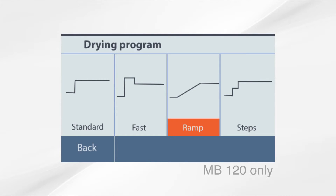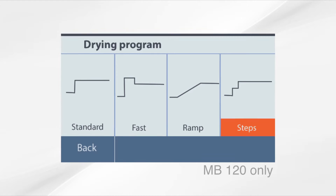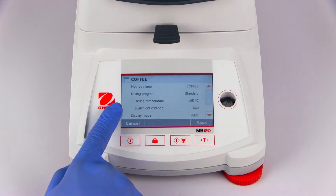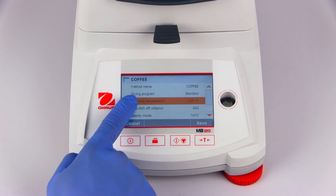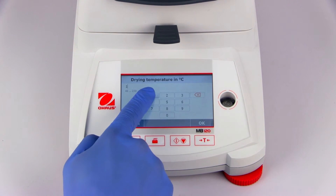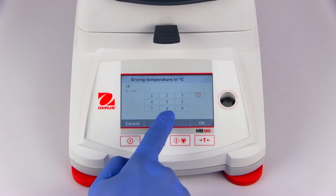The Ramp Drying Profile lets you heat your sample to the target temperature slowly over time. The Step Drying Profile lets you set multiple target temperatures and a shutoff criterion for each step. In addition to a drying profile, a drying temperature must be set.